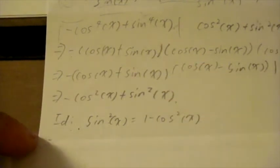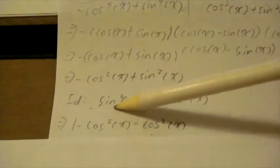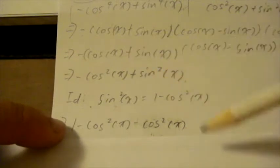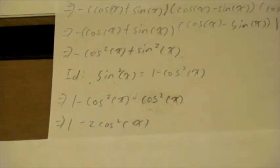Now we're going to use our original identity and flip it around. Sine squared x equals 1 minus cosine squared x. If we plug this sine squared into our expression, it will become 1 minus cosine squared x minus cosine squared x. Then using algebra it will become 1 minus 2 cosine squared x.